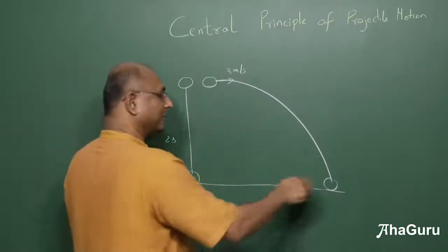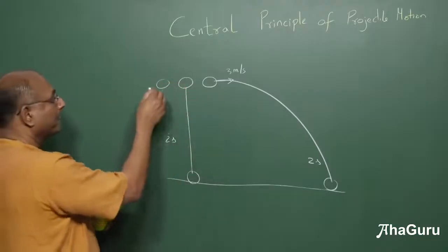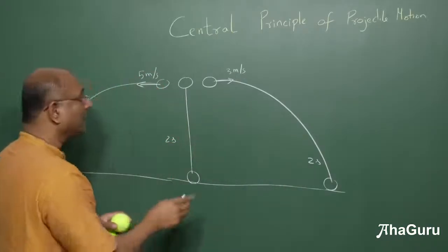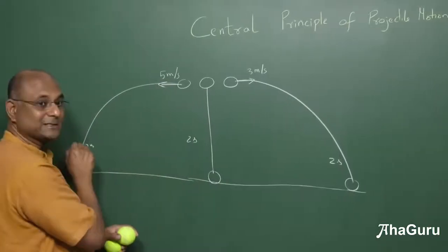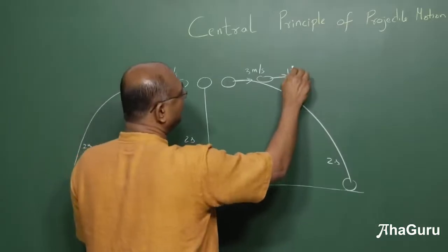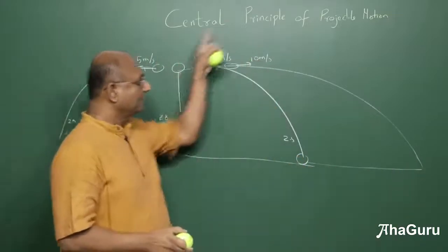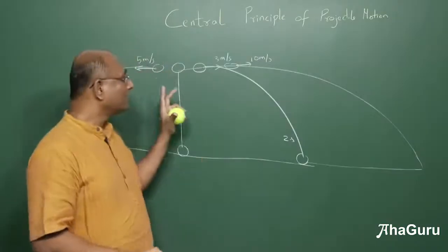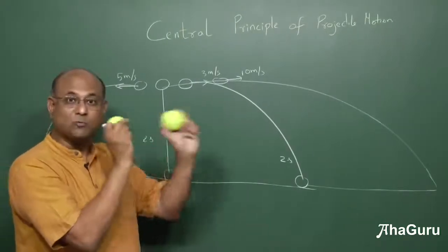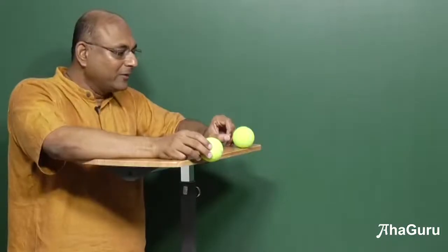If the dropped ball took two seconds to hit the ground, the ball thrown at three metres per second also takes two seconds. A ball thrown at five metres per second takes two seconds, and one thrown at ten metres per second also takes two seconds. This is something you have to start believing, and the best way is to see an experiment. I'm going to throw two balls — one faster, one slower — and you will see they take the same time to hit the ground.